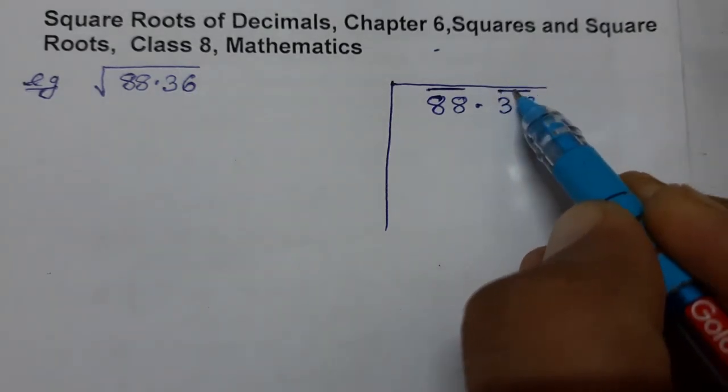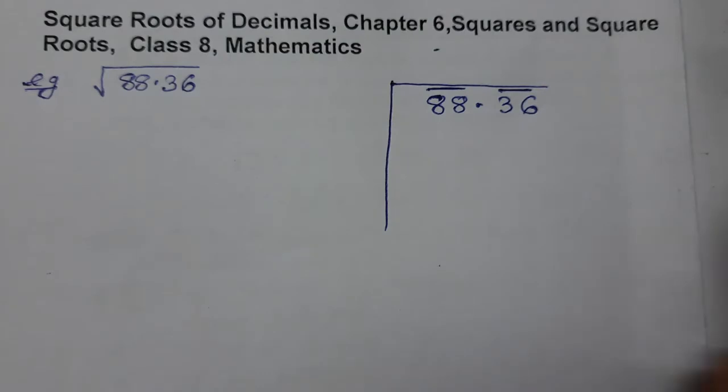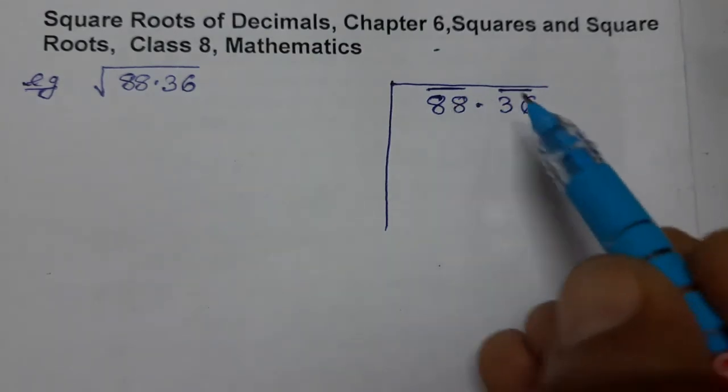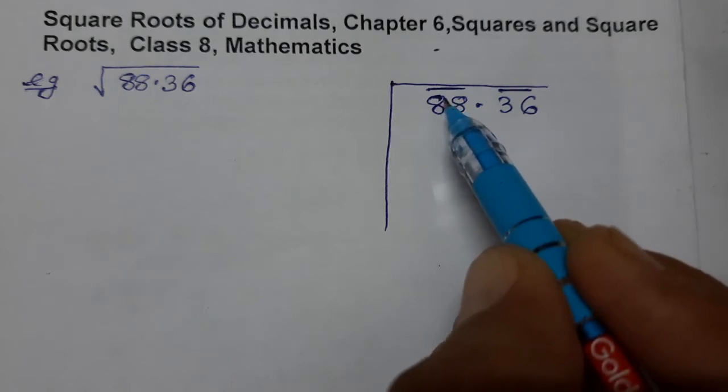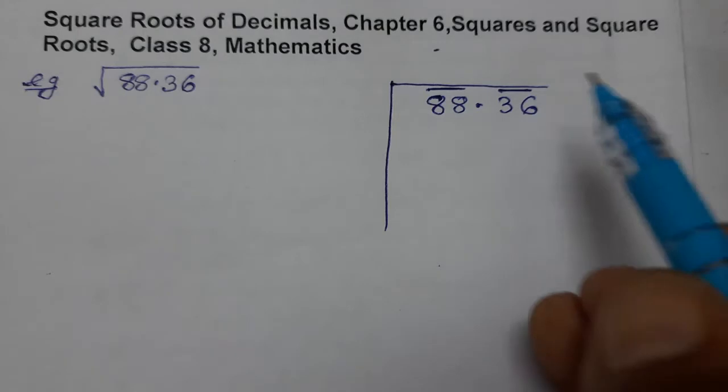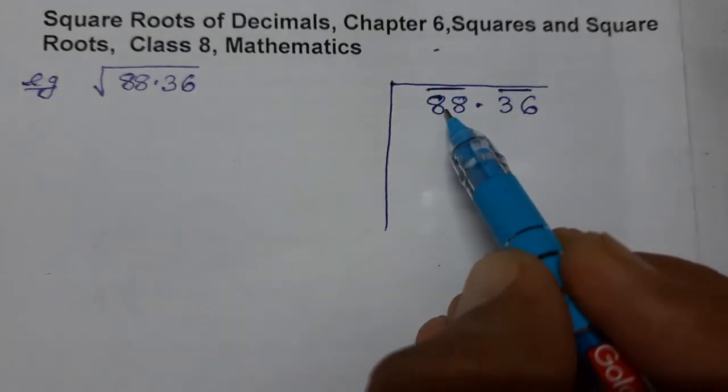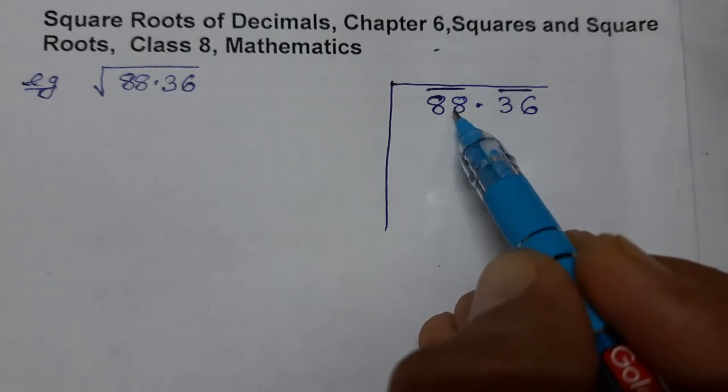First of all, we have to start from the integral part and then the decimal part. So this is just the reverse of what we are studying in division method. First of all, we have to start from the integral part. Now the method is the same. We have to find out the number that 88 will come or less than it will come.